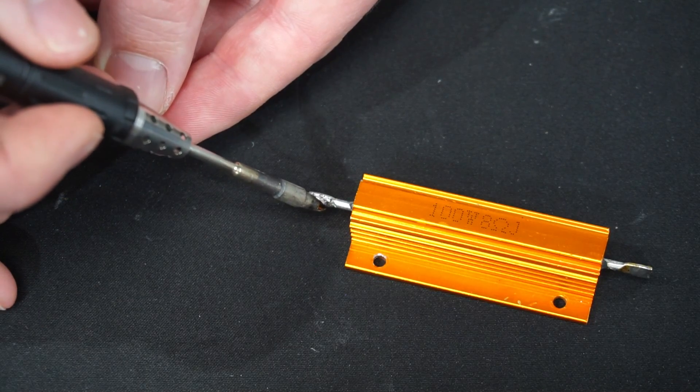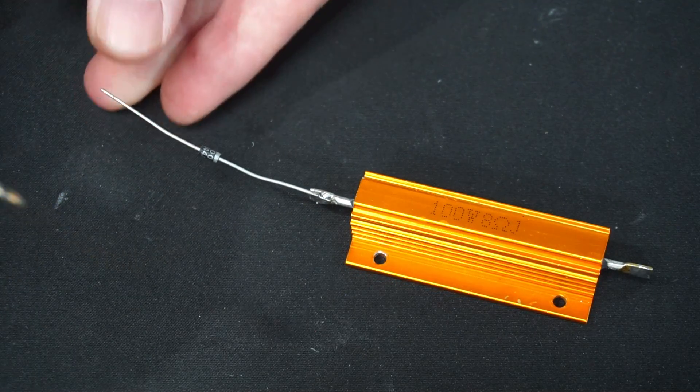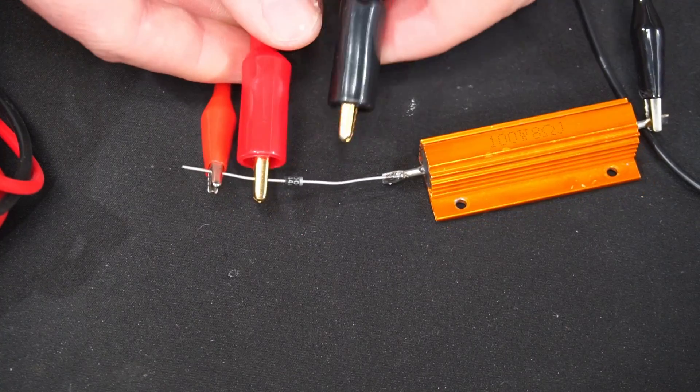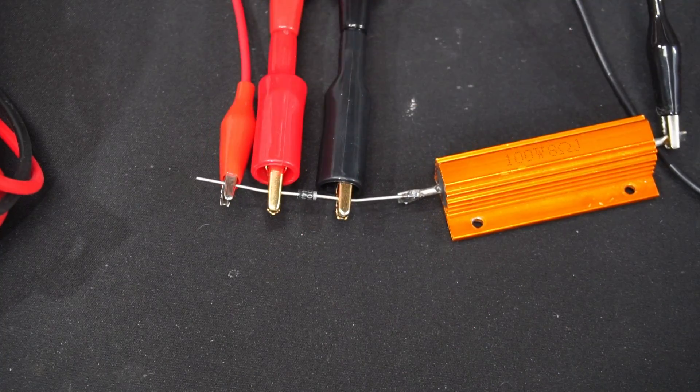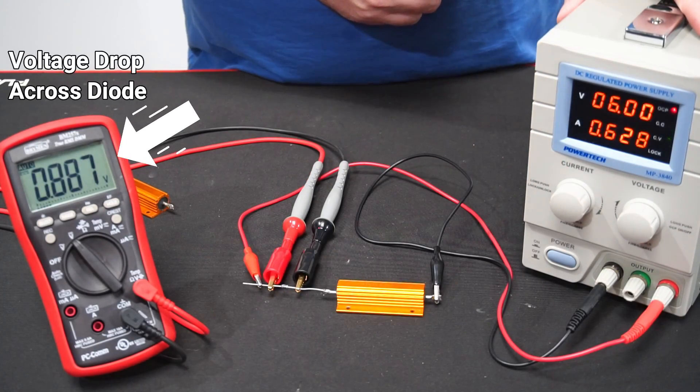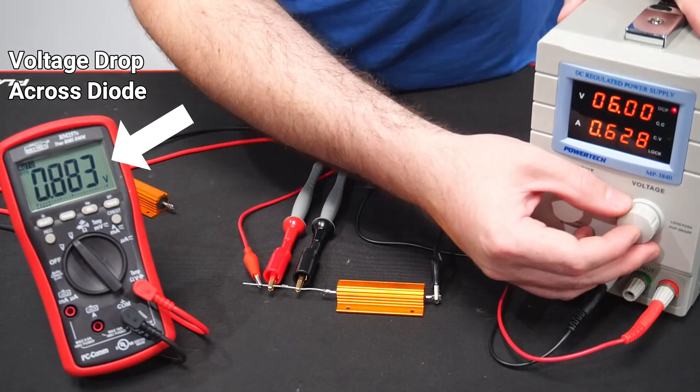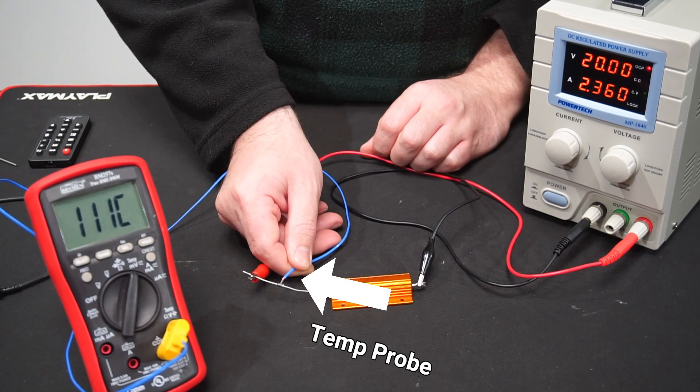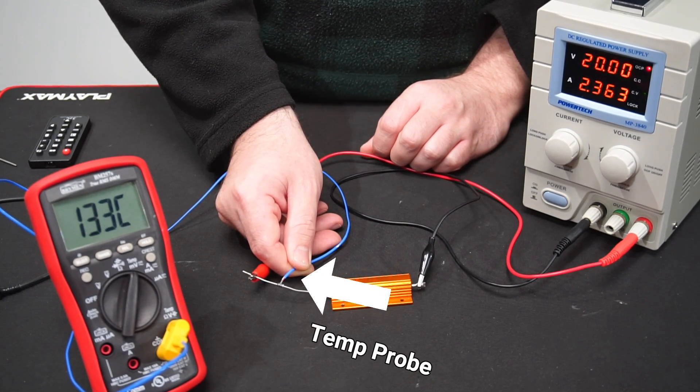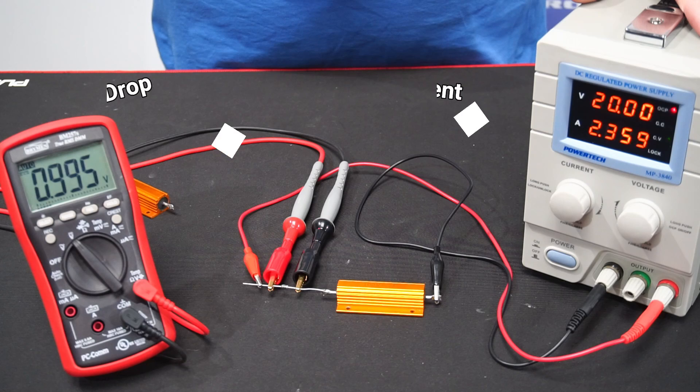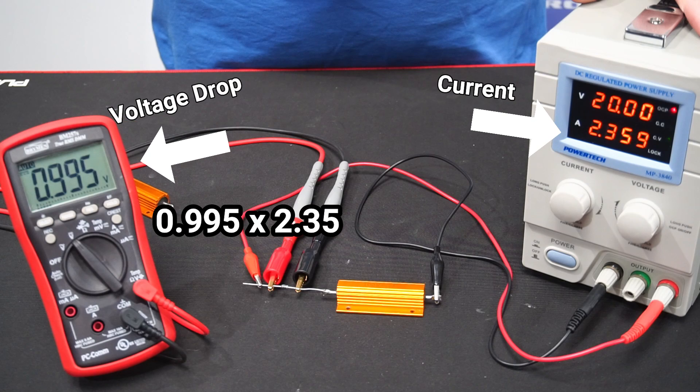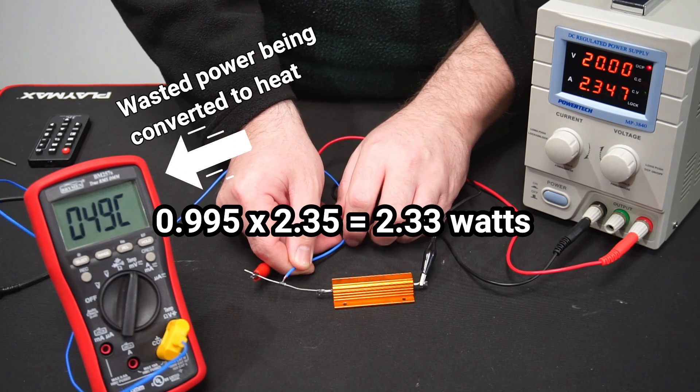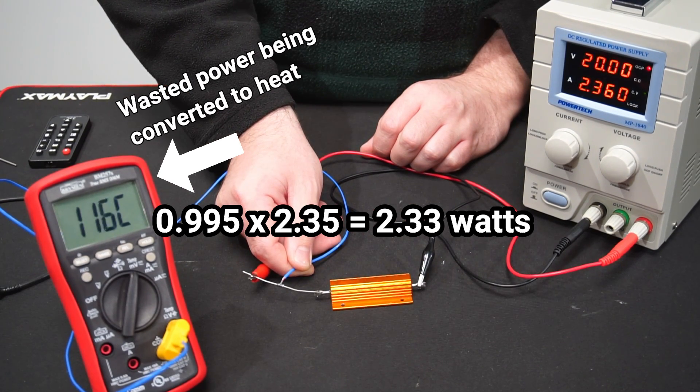To act as a dummy load for testing I'll use this 8 ohm power resistor. The power supply is connected to the diode and dummy load while the multimeter is connected across the diode to measure the voltage drop. As I raise the voltage higher notice how the voltage drop across the diode raises with the amount of current passing through the diode. This leads to more power loss and an excessive amount of heat that can damage the diode. You can calculate the amount of power loss that is converted into heat by multiplying the voltage drop across your diode by the amount of current passing through the diode. Which is 2.33 watts of power being wasted as heat. Which certainly isn't ideal.